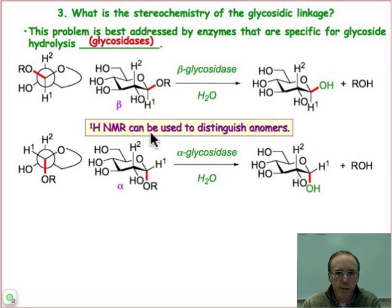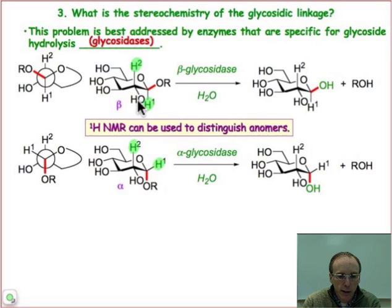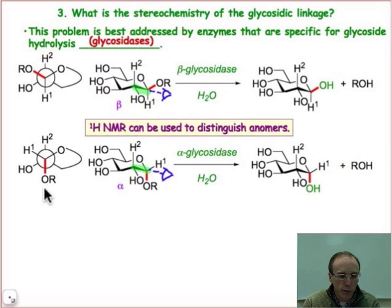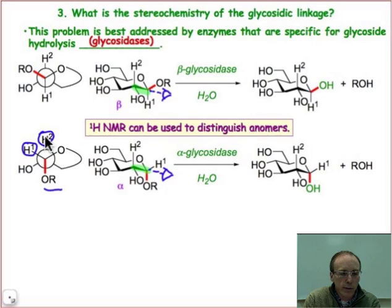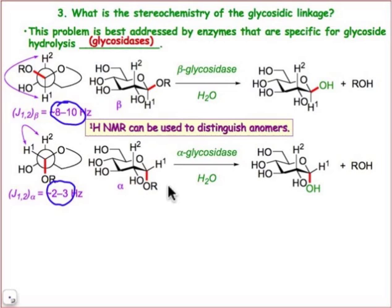There's another way to determine this that's often used: NMR and coupling constants. The hydrogen atoms labeled H1 and H2 have very different orientations in the two different anomers — α or β. Looking down the C1–C2 bond via Newman projections, the α anomer gives a diaxial arrangement of hydrogen atoms with coupling constants of 8 to 10 Hz, easily identified relative to the 2 to 3 Hz coupling constant for an axial-equatorial arrangement in the β anomer.